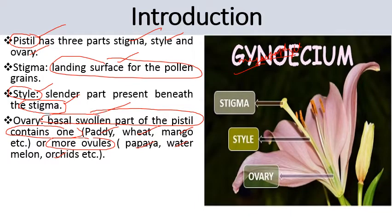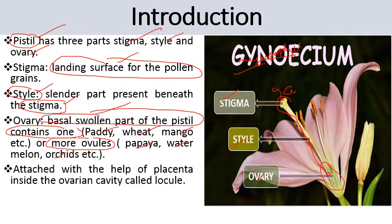So the carpel has three portions: stigma, the uppermost portion where pollen grains settle; style, a cylinder-like structure; and the ovary, a basal swollen structure that bears ovules.